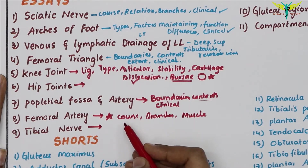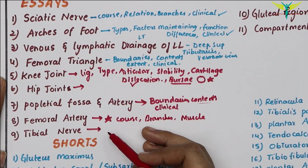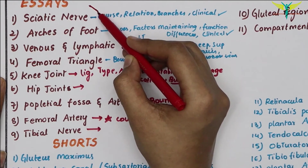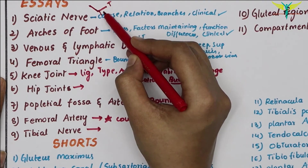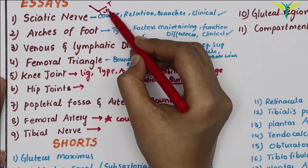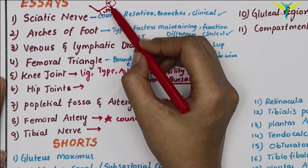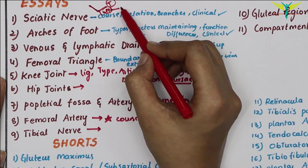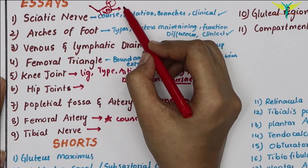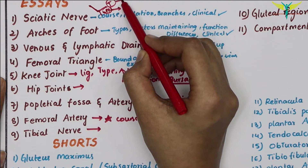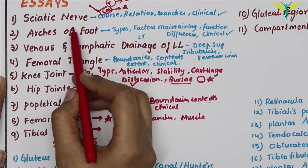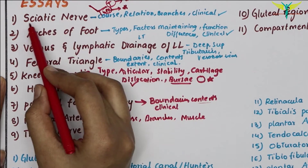You can read about the sciatic nerve and its divisions: the sciatic nerve divides into the tibial nerve and the common peroneal nerve. You should read both in depth. The common peroneal nerve is very important in shorts, and the tibial nerve can also be asked as an essay.